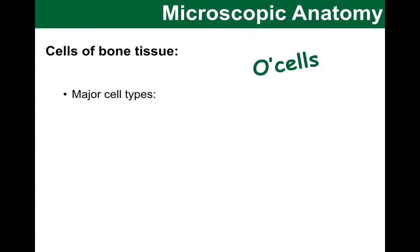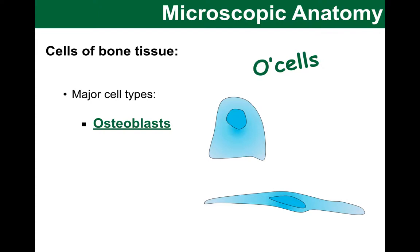First, osteoblasts. These are the ones that make new bone and control calcium and mineral deposition. When you look at the diagrammatic figures provided, you will note that they have one nucleus inside them. And when they age, they become lining cells that regulate calcium passage and respond to hormones.